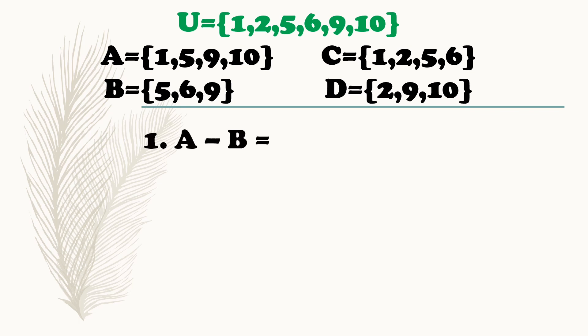First, get the difference of set A and set B. Based sa definition, tatanggalin natin yung elements ni set B na makikita kay set A. Then yung elements na matitira kay set A, siya yung difference. Tingnan natin yung elements ni set A: 1, 5, 9, 10. Set B: 5, 6, 9. Ano yung elements ni set B na makikita kay set A? 5 at 9. So kapag tinanggal yung 5 at 9 kay set A, anong matitirang elements? 1 at 10.